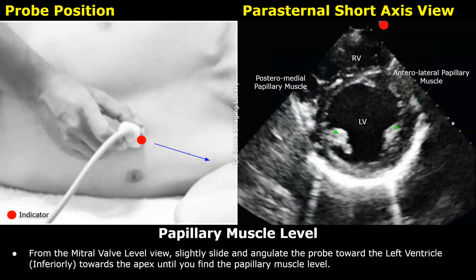From the mitral valve view, slightly slide and angulate the probe downwards towards the apex until you see the papillary muscle level. Inside the left ventricle, these structures are the papillary muscles. The anterolateral papillary muscle is seen on the right side and the posteromedial papillary muscle is on the left side in this view.